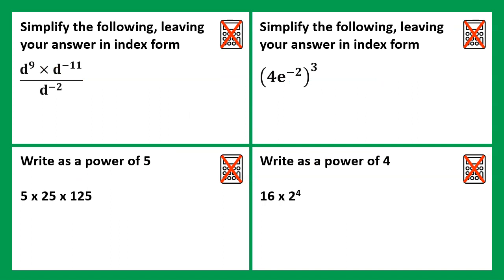Lastly, we have the advanced questions, which are some of the trickiest types of questions that you can find on this topic. Simplifying the numerator and the denominator separately, we have a base of d, and then we're doing 9 plus negative 11, which is the same as 9 take away 11, so is negative 2.